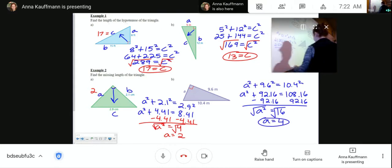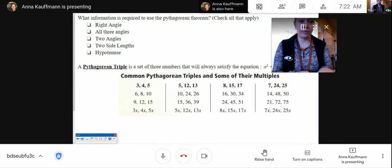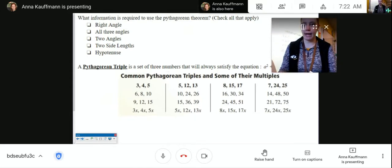Okay, continuing on. So it says, what information is required to use the Pythagorean theorem? Check all that apply. Do you need to know that it's a right angle? Do you need to know all three angles? Do you need to know two angles? Do you need to know two side lengths? And do you need to know a hypotenuse?